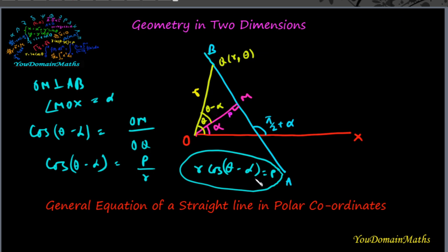This is the equation of a straight line in the polar coordinate system, where p is the distance from the origin to the straight line, and alpha is the angle between the perpendicular line and the initial axis.